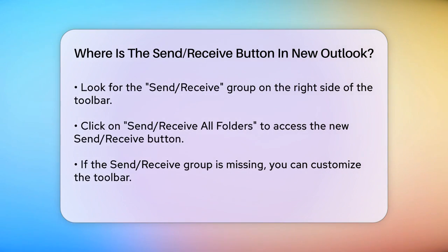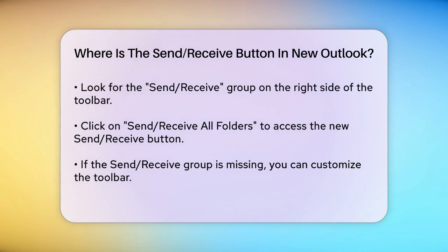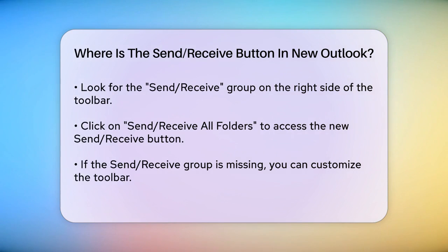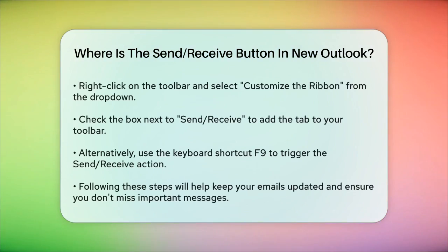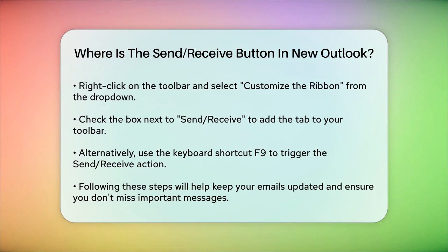If you don't see the Send Receive group, you might need to customize your toolbar. Here's how: Step 1 — right-click on any of the tabs or buttons at the top of the screen. Step 2 — select Customize the Ribbon from the drop-down menu. Step 3 — in the Customize the Ribbon window, check the box next to Send Receive to add this tab to your toolbar. Once added, you'll have easy access to the Send Receive button whenever you need it.